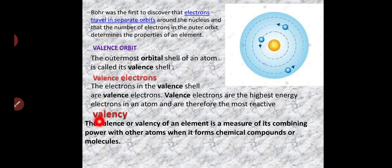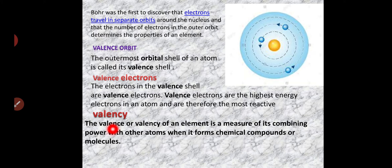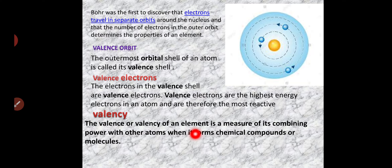What is valency? The valency or valence of an element is a measure of its combining power with other atoms when it forms chemical compounds or molecules. The capacity of the electron to share with other elements is called the valency of that element. Chemical reactions happen because of this capacity of electrons to share with each other.